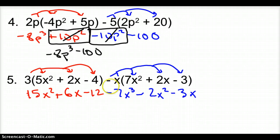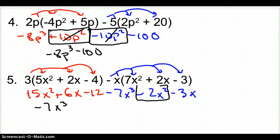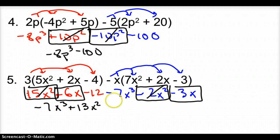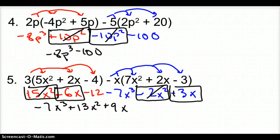Simplify: I have negative 7x cubed as my only cubic term. I have positive 15x squared and negative 2x squared, so those combine to plus 13x squared. Then positive 6x and minus 3x — I caught myself here, this should be a plus 3x, so that should be a plus 9x. And finally, minus 12.